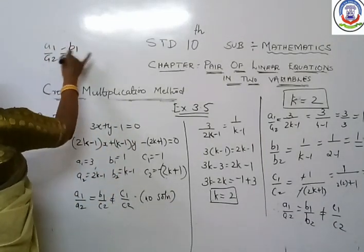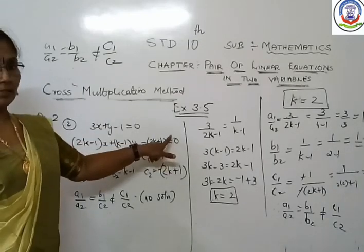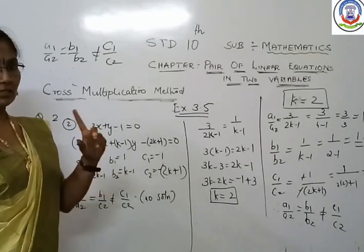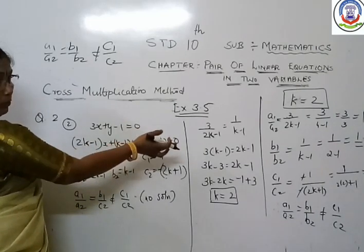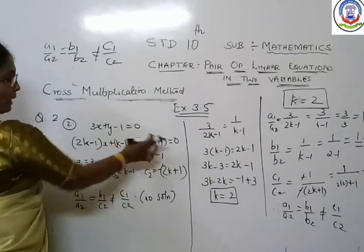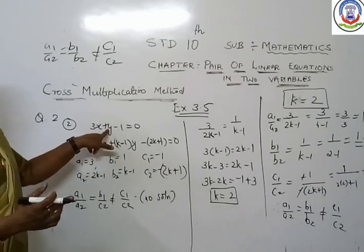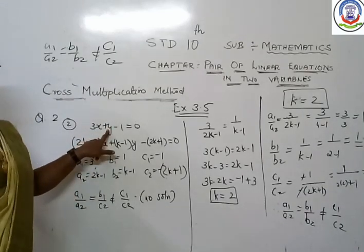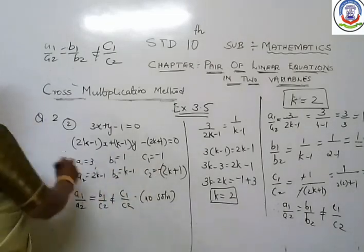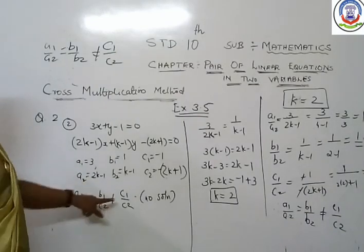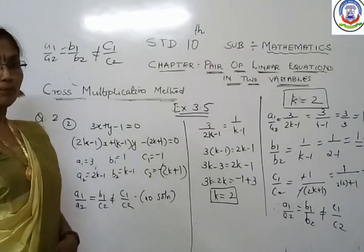For no solution, you know that a1/a2 = b1/b2 but not equal to c1/c2. The equation given is 3x + y = 1, so in standard form: 3x + y − 1 = 0. The second equation is (2k−1)x + (k−1)y = 2k + 1, which in standard form becomes (2k−1)x + (k−1)y − (2k+1) = 0. Separate the coefficients: a1 = 3, a2 = 2k−1, b1 = 1, b2 = k−1, c1 = −1, c2 = −(2k+1).